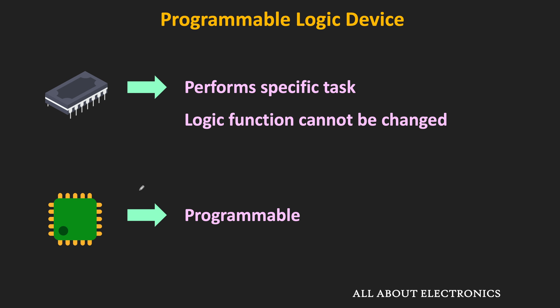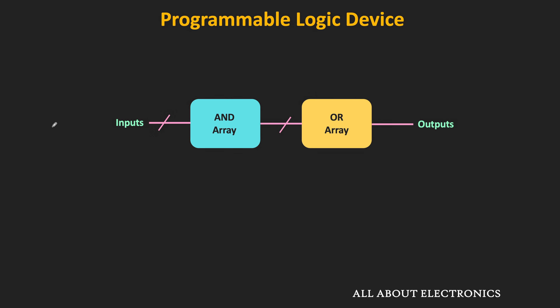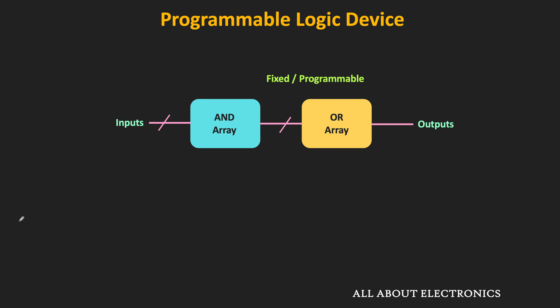There are different types of programmable logic devices, like the PLA, CPLD, and the FPGA. Even a programmable ROM can be used as a programmable logic device. If you see the combinational PLDs, they consist of an array of AND gates and OR gates, and the interconnections between them can be programmable. In these PLDs, the interconnection between the inputs and the AND gate can be fixed or programmable. Likewise, the interconnection between the AND gate array and the OR gate array can be fixed or programmable. By programming these interconnections, it is possible to implement different logic functions.